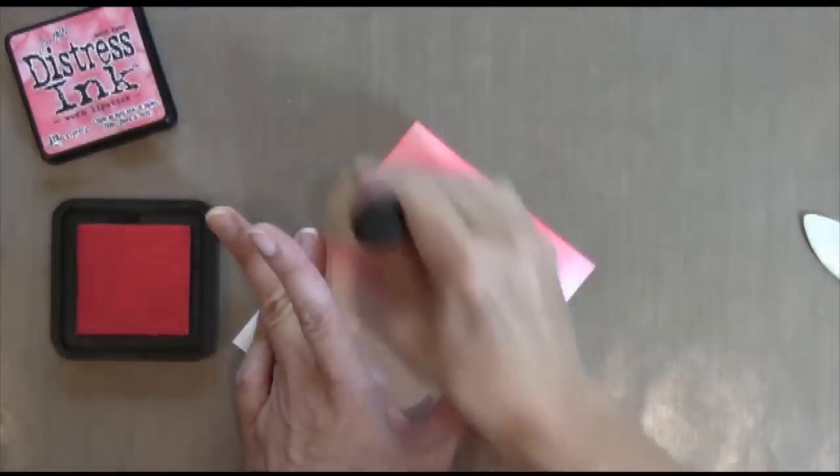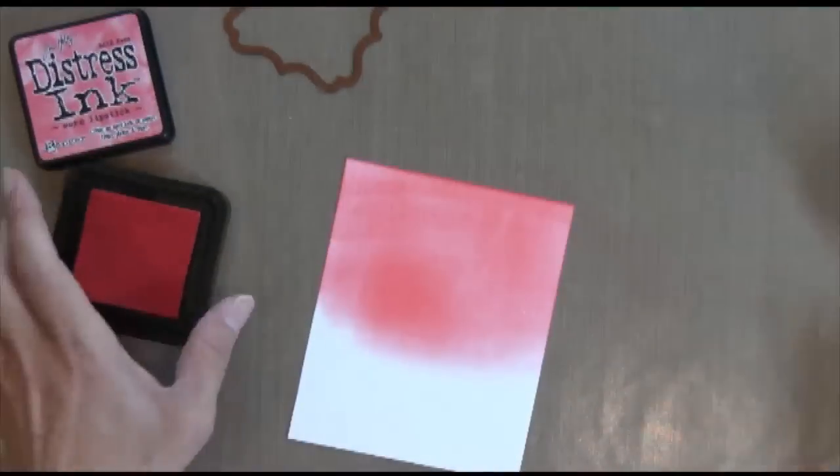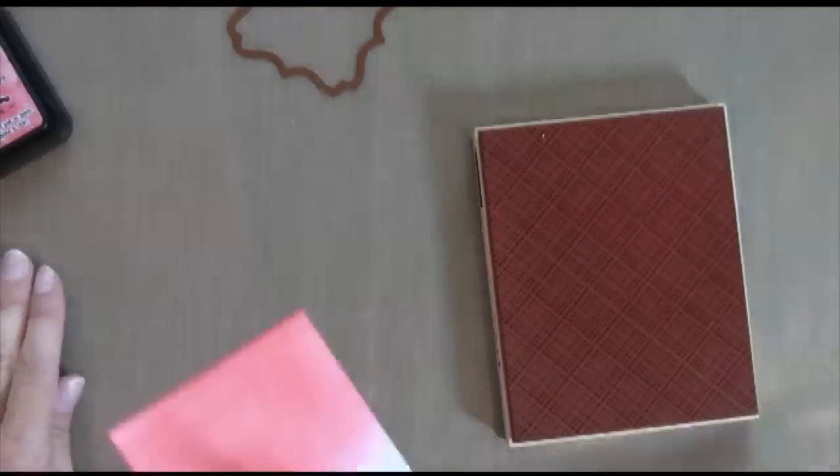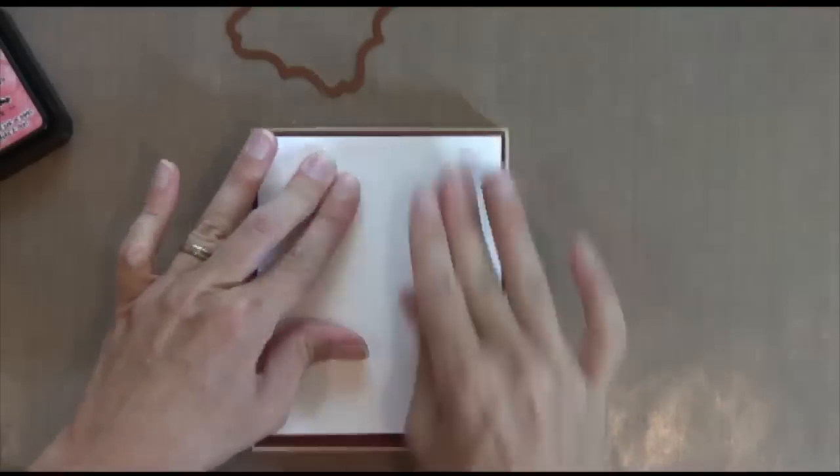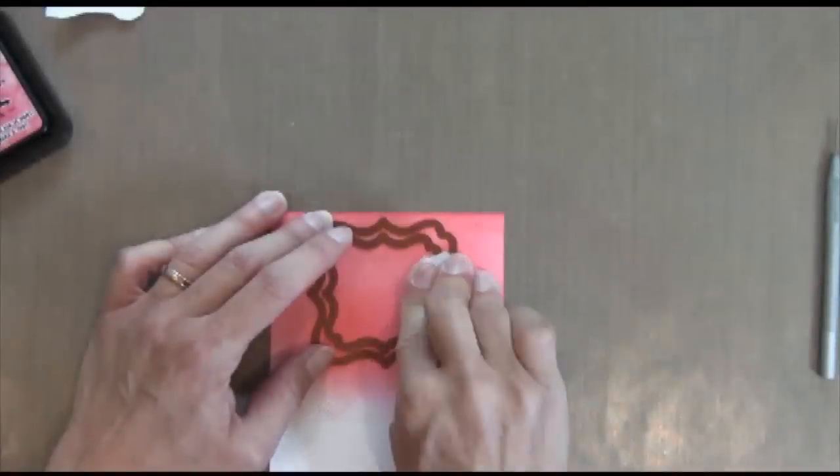All right, I'm taking a piece of, this is all Neenah cardstock because I'm using Distress Ink, and this is worn lipstick, and I'm just covering it up, and then I'm going to use the envelope pattern from Hero Arts just to create a little bit of texture on this piece in the same exact color, so worn lipstick. It's pretty subtle.